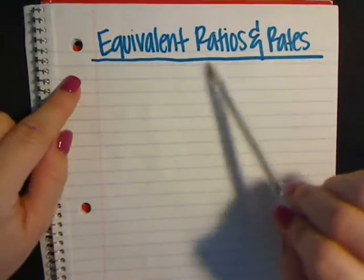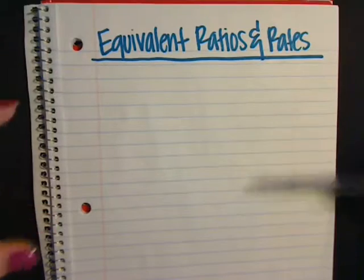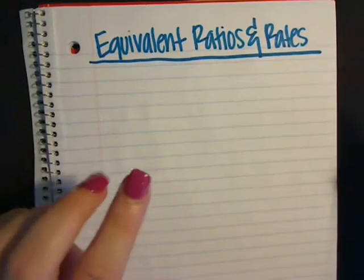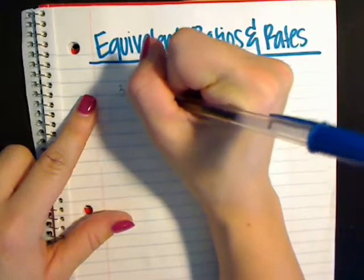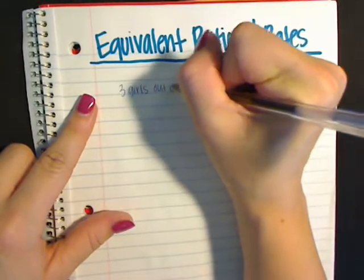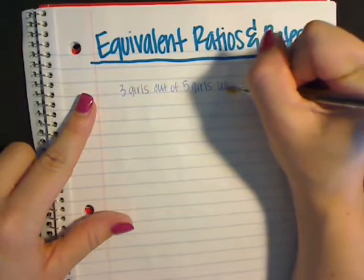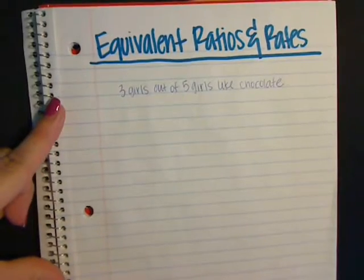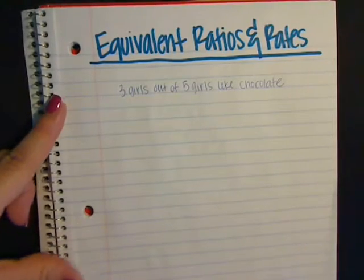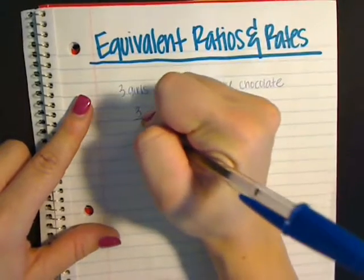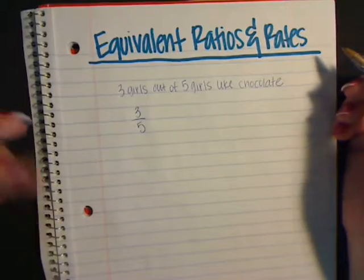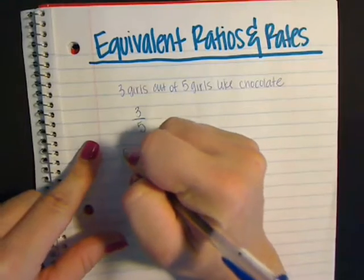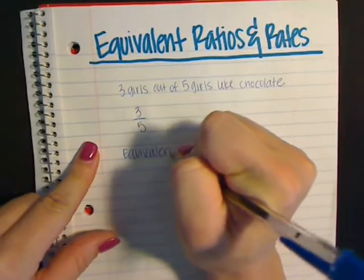Today we're going to talk about equivalent ratios and rates. The first thing we're going to do is figure out how to find an equivalent ratio or rate. Say I gave you the rate 'three girls out of five girls like chocolate' and I wanted you to find an equivalent rate. Finding equivalent ratios or rates is just like finding equivalent fractions.